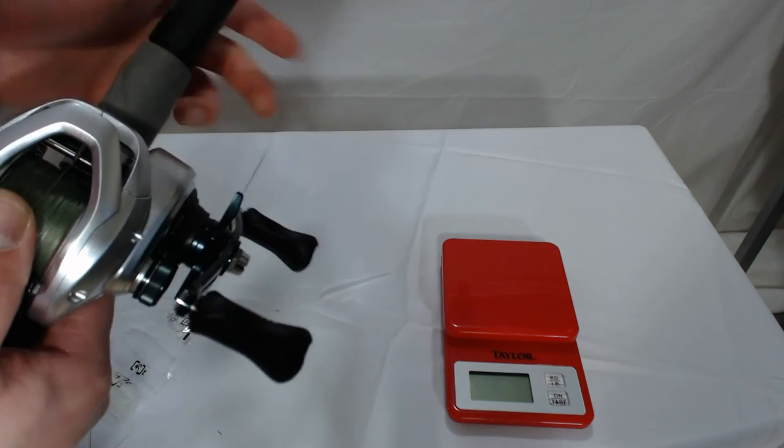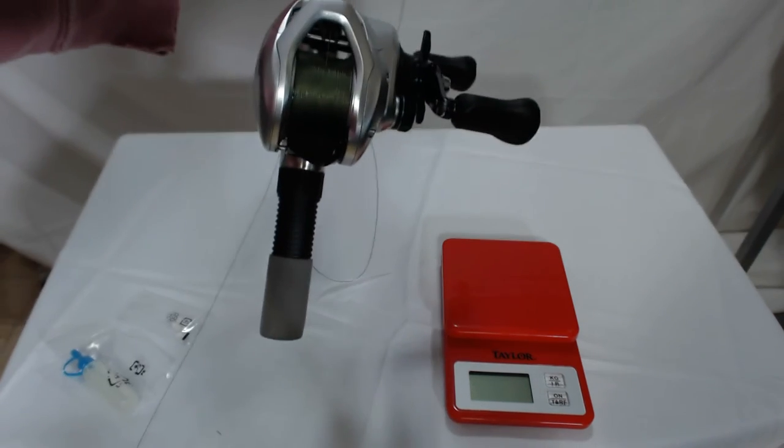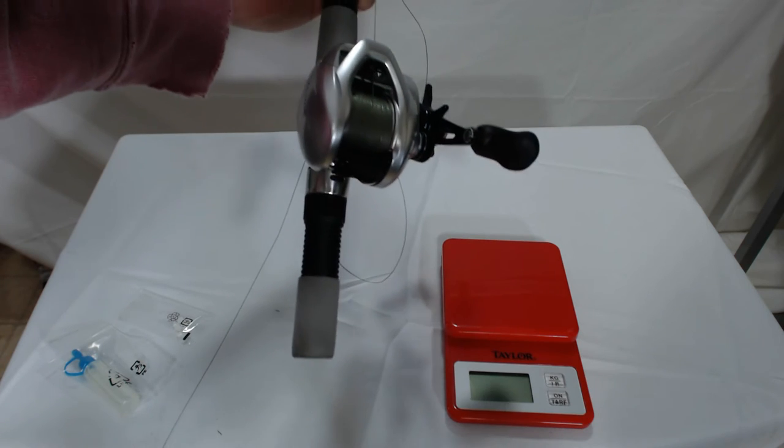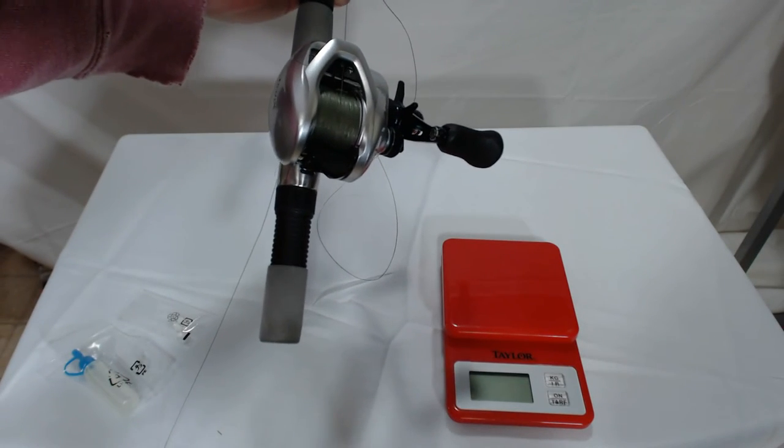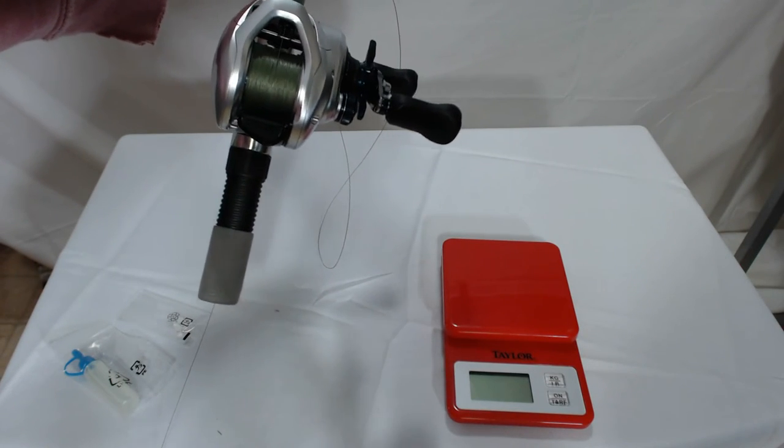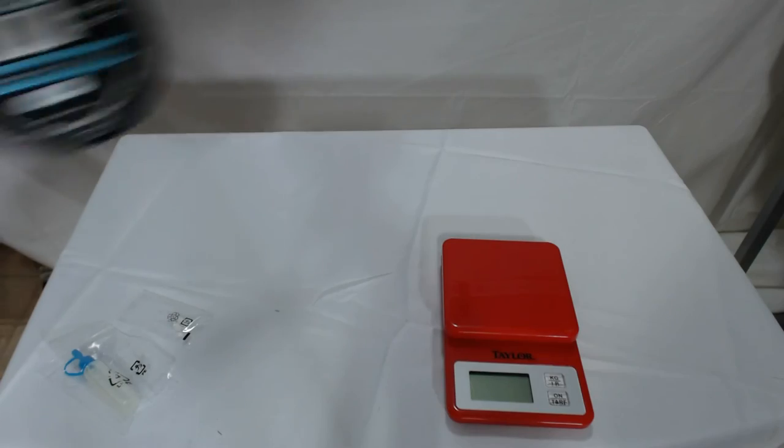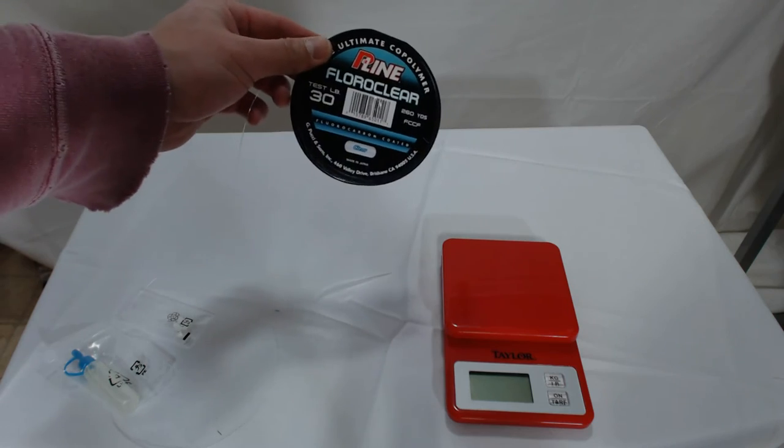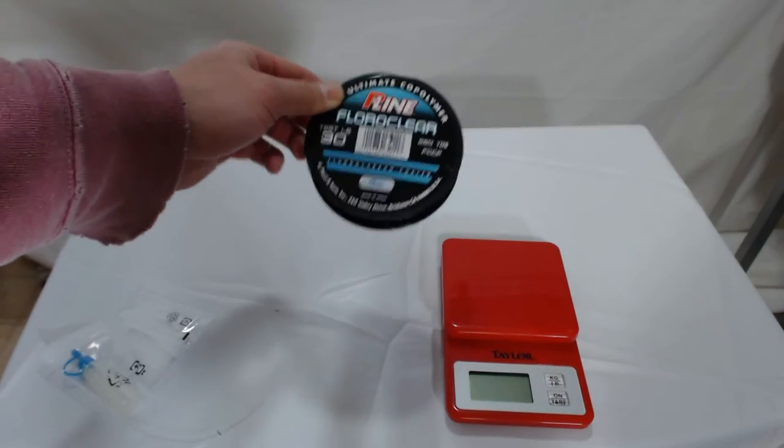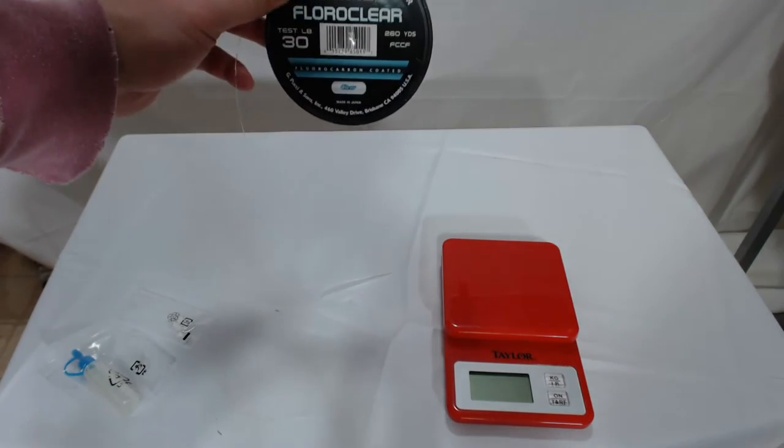The next step is to put some leader on it. I ran out of fluorocarbon unfortunately, so I'll be putting on mono 30 pound test. I don't have fluorocarbon but I do have fluoroclear P-line, so I'll put this on. I think it might work better than the mono.